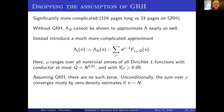Unconditionally, you do have zero-density estimates which basically tell you there aren't too many of these zeros ρ, and they get even less frequent as Re(ρ) tends to 1. So that sum over zeros actually converges nicely. This gives a corrected truncated approximant to the von Mangoldt function which also sees potential zeros of Dirichlet L-functions and hence sees more of the potential irregularities of the primes.